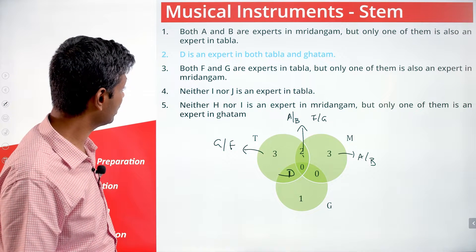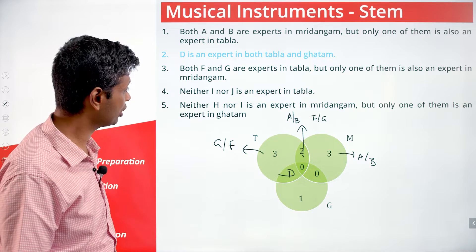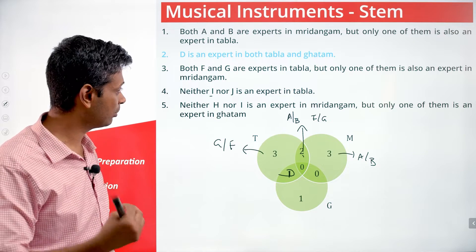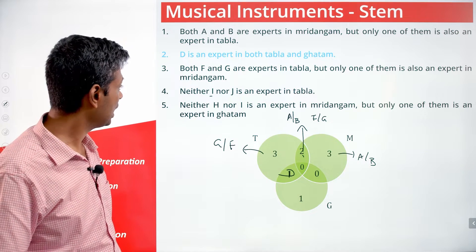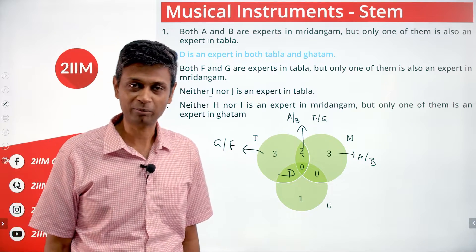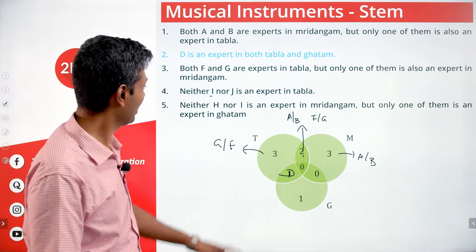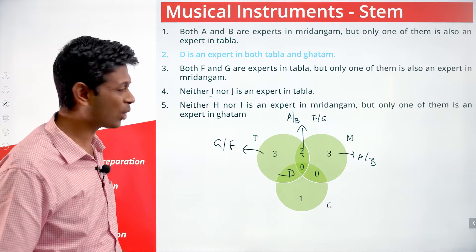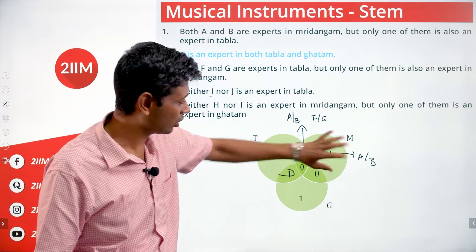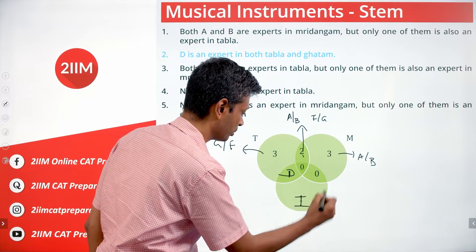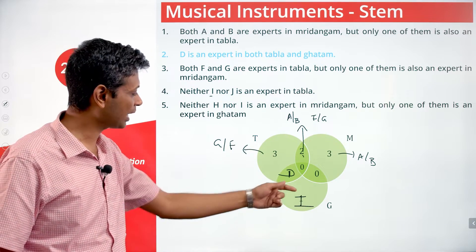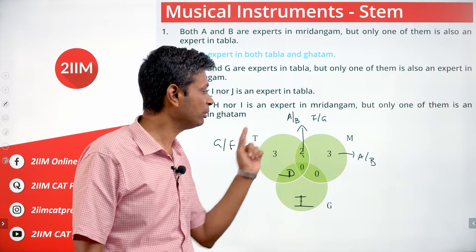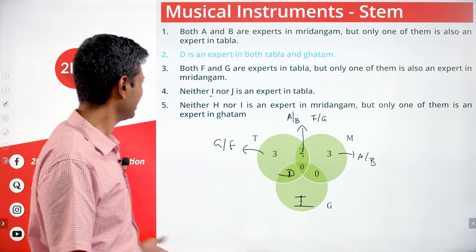Neither I nor J is an expert in Tabla. Neither H nor I is an expert in Mridhangam. So I is not in Tabla regions and not in Mridhangam regions — I can only be in Ghatam only. That places I in Ghatam only. J is not in Tabla, so J should be in Mridhangam only. H is not in Mridhangam, so H goes in Tabla only.